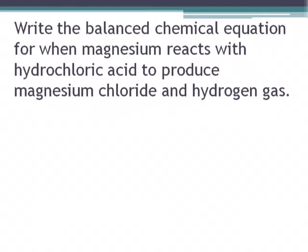Let's write the balanced chemical equation for when magnesium reacts with hydrochloric acid to produce magnesium chloride and hydrogen gas. Magnesium and hydrochloric acid, HCl, reacts to produce magnesium chloride.